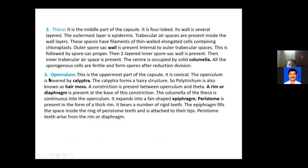The third region of the capsule is the operculum - the uppermost part, conical in shape, acting like a cap or lid. The operculum is covered by calyptra, a protective hairy layer - due to this Polytrichum is known as hair moss or cap moss. The operculum is attached to the theca at a constriction point called the diaphragm or rim.